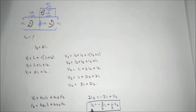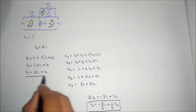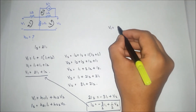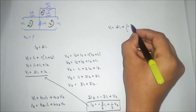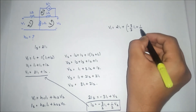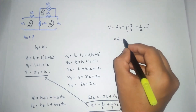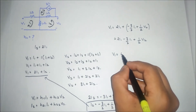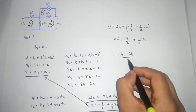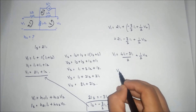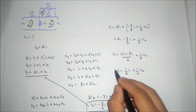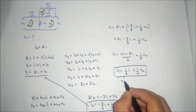Now we substitute the value of I2 into the V1 equation. V1 equals 2I1 plus (minus 3/2·I1 plus 1/2·V2). Simplifying: V1 equals (4I1 minus 3I1) divided by 2 plus (1/2)V2, which gives V1 equals (1/2)I1 plus (1/2)V2.